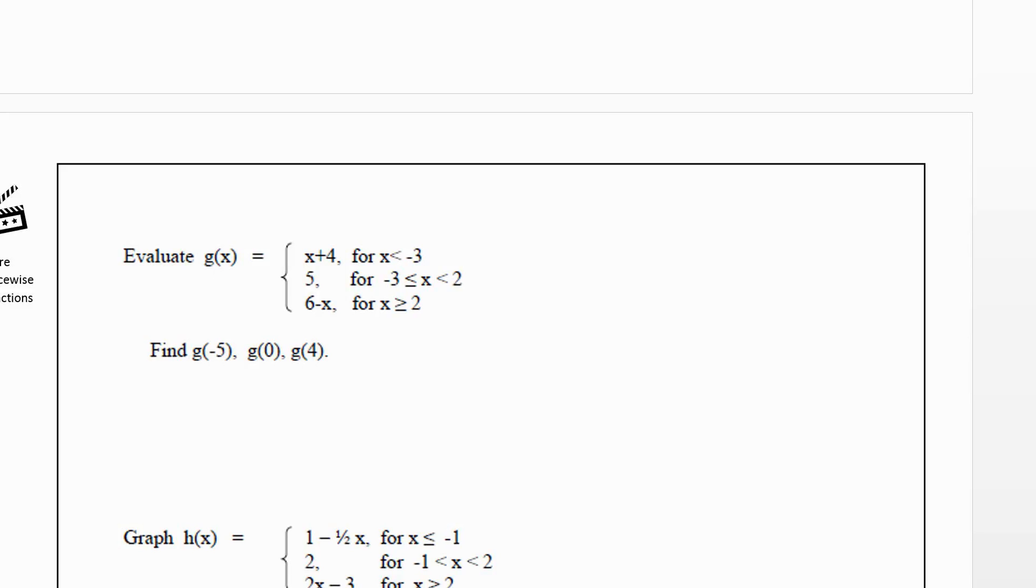Let's take another look at piecewise functions. Here we have g(x) and these are broken into three pieces. We have x+4 when x is less than -3, so any values less than -3 we would plug into x+4. For x greater than or equal to -3 and less than 2, you would always get out 5. And for x greater than or equal to 2, so 2 or larger, you would plug into 6-x.